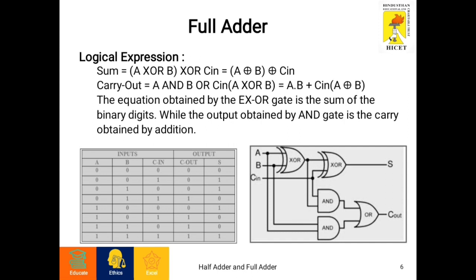For 010 inputs, C out will be 0 and sum will be 1. For 011 inputs, C out will be 1 and sum will be 0. For 100 inputs, C out will be 0 and sum will be 1.